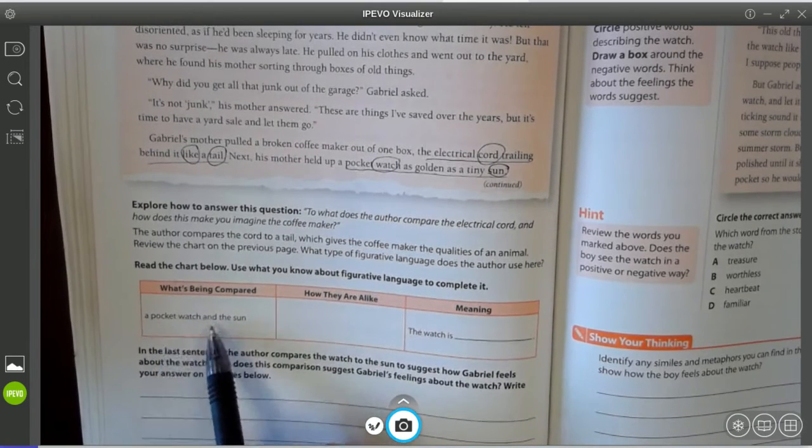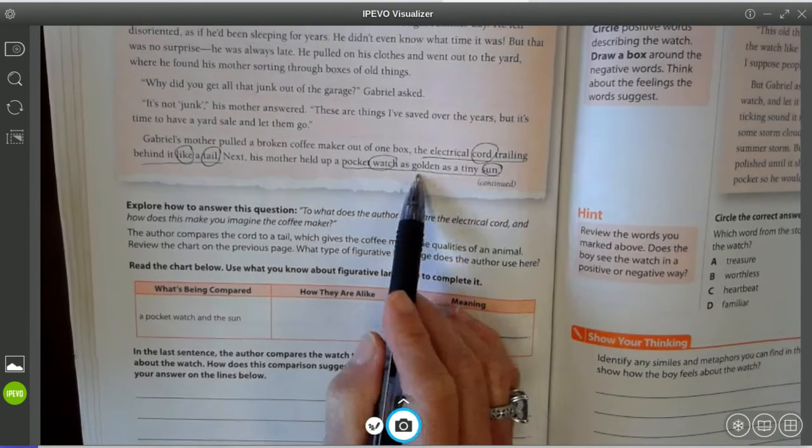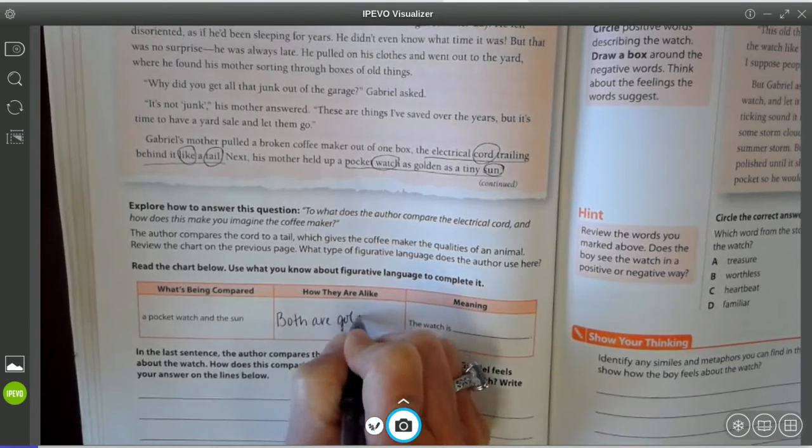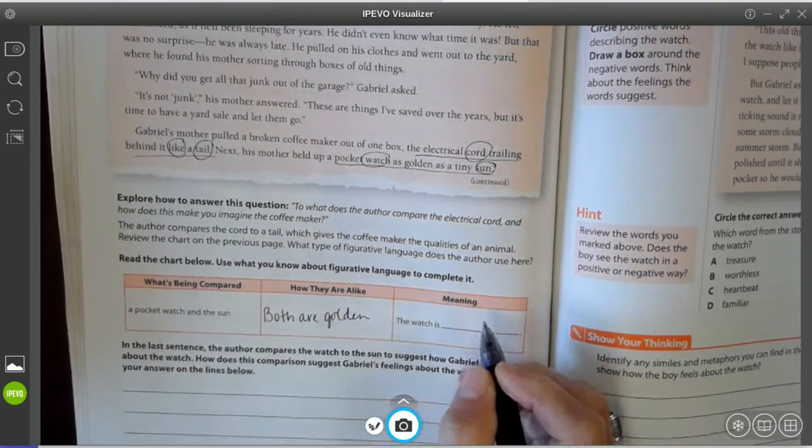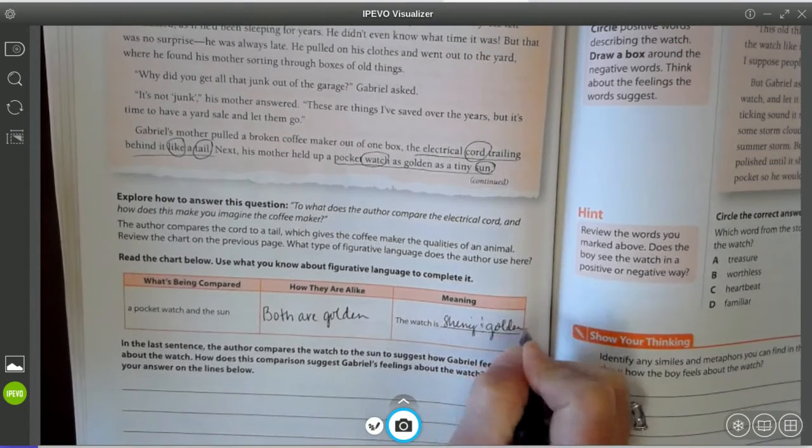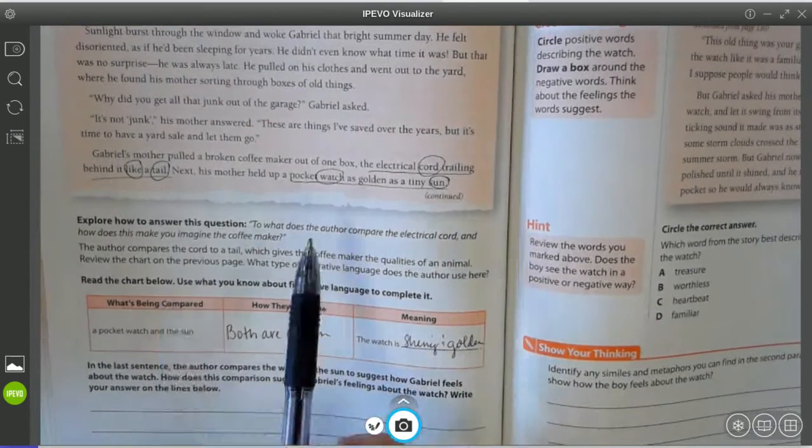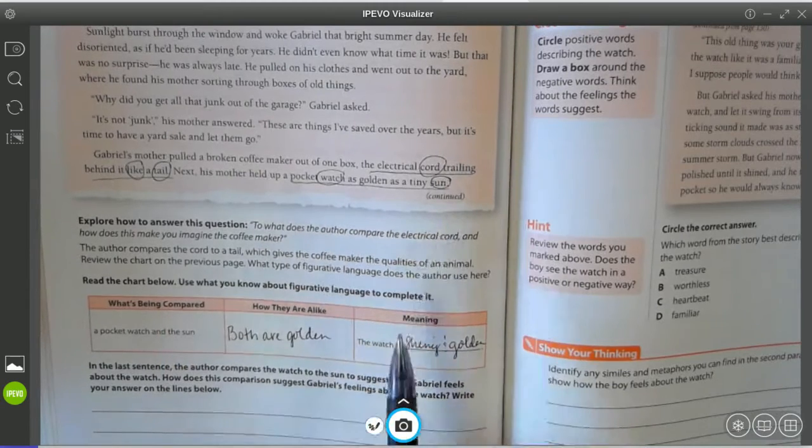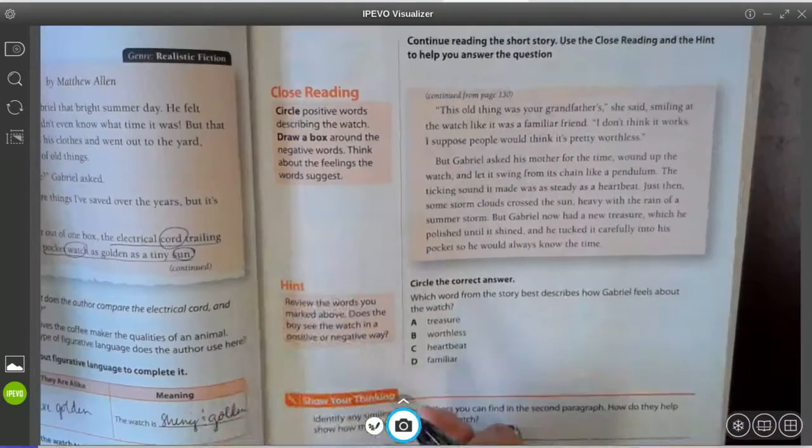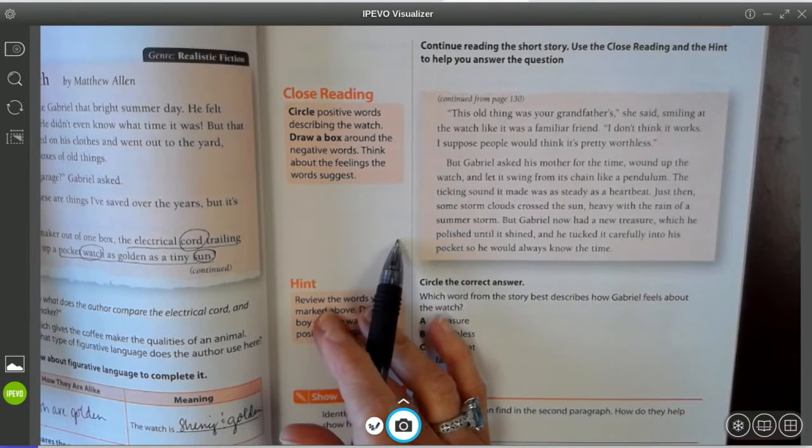Well, it tells me that they're golden. So I would say that both are golden yellow color. So that would tell me that this watch is shiny and golden. So when you see a simile or some type of figurative language, you determine what's being compared and what they would have in common. And you think through what is it that the author wants you to, why did they use that comparison? What is it that they're wanting you to notice?